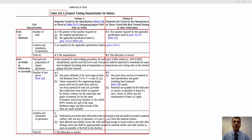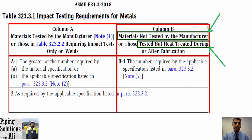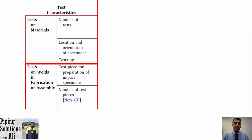Impact testing requirements for metals. If the metal needs impact tests based on B31.3, we shall refer to this table, which is divided into two rows and two columns. Column A covers materials tested by the manufacturer, or those in table 323.2.2 requiring impact tests only on welds. Column B covers materials not tested by the manufacturer, or those heat-treated during or after fabrication. The two rows are: test on materials, and test on welds in fabrication or assembly.